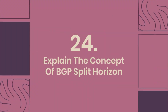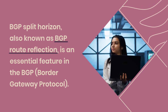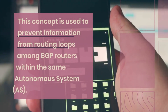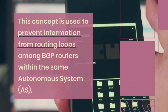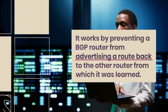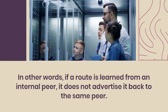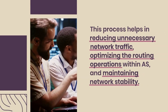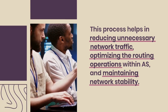Explain the concept of BGP Split Horizon. BGP Split Horizon, also known as BGP route reflection, is an essential feature used to prevent routing loops among BGP routers within the same autonomous system. It works by preventing a BGP router from advertising a route back to the router from which it was learned — if a route is learned from an internal peer, it is not advertised back to that same peer. This process helps reduce unnecessary network traffic, optimize routing operations within the AS, and maintain network stability.